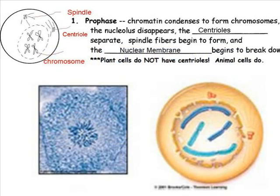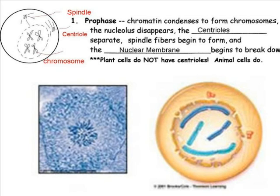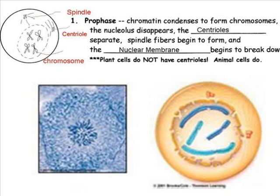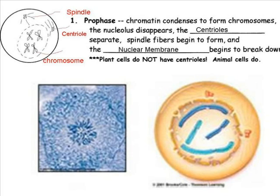Let's take a look at the steps of mitosis in more detail. There is a micrograph of an actual cell pictured on the left and a diagram on the right. During prophase, the chromosomes are visible. The centrioles begin to separate — centrioles are cell structures that aid the cell in separating the chromosomes. Spindle fibers begin to form. Spindle fibers are also cellular structures that work with the centrioles to separate the chromosomes. The nuclear membrane also begins to break down during prophase.